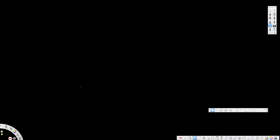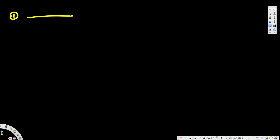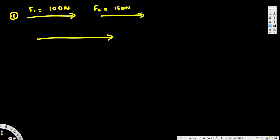In this video we are going to see how to add or subtract two vectors analytically. Let's say we have two vectors: one of 100 newtons horizontally and another vector in the same direction of 150 newtons. The resultant vector is going to be the addition of these two, which is 250 newtons, because both are in the same direction so we can directly add them together.